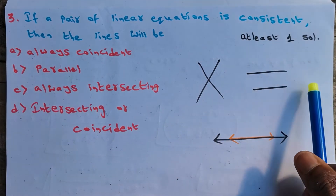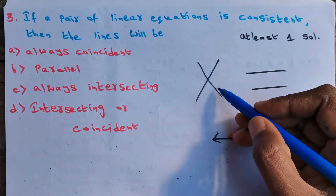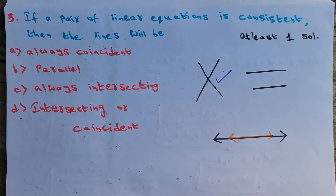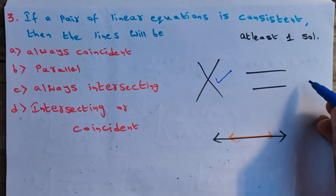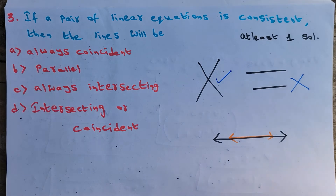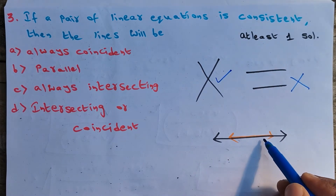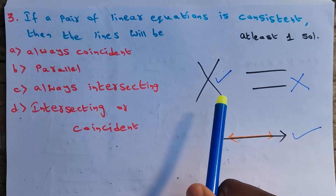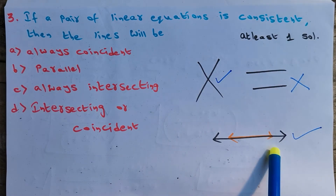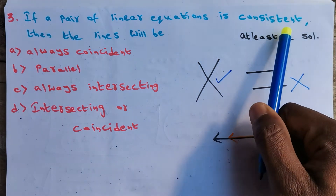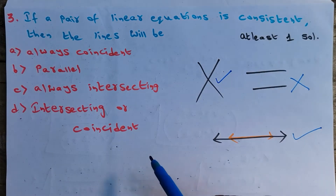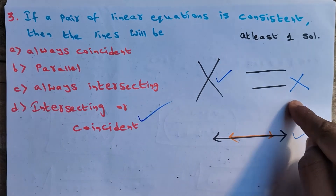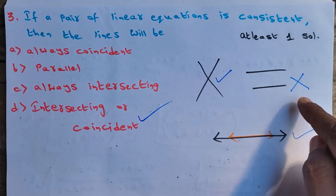Intersecting lines touch each other, so at least one solution exists. Parallel lines don't touch at all, so they have no solution. Coincident lines touch at infinitely many places, so infinite solutions exist. Intersecting and coincident lines are considered consistent. So the answer is intersecting or coincident — option D. Parallel lines are inconsistent because they have no solution.